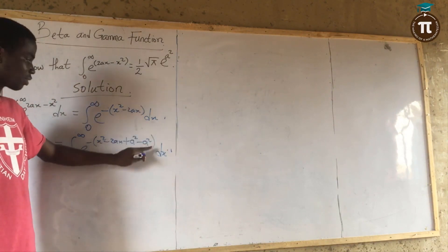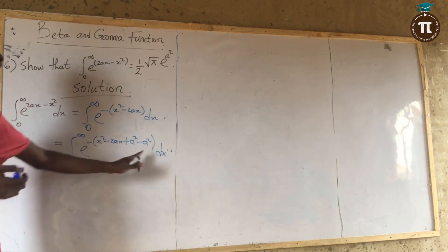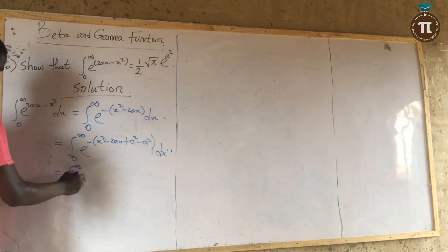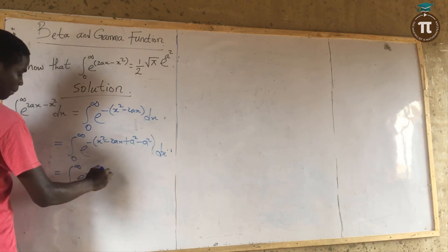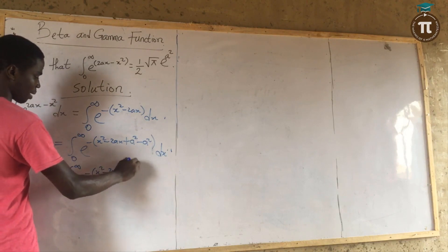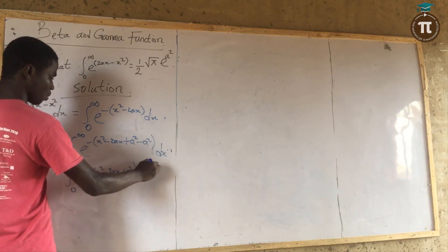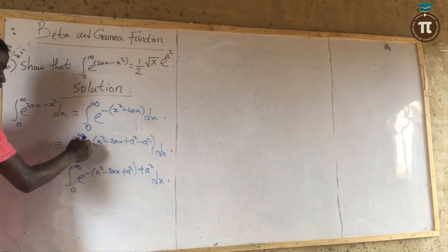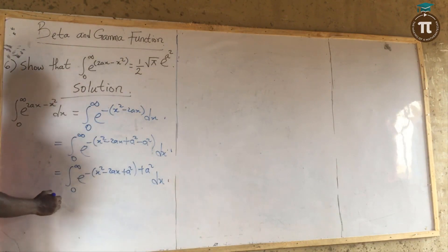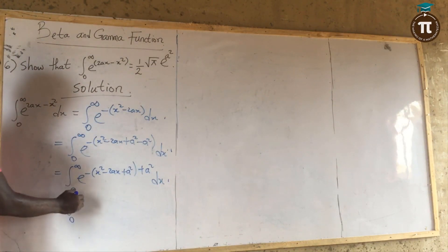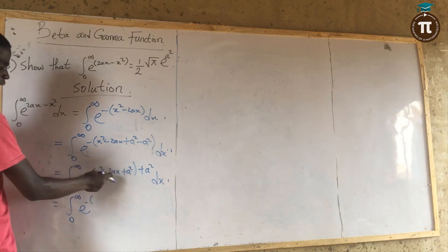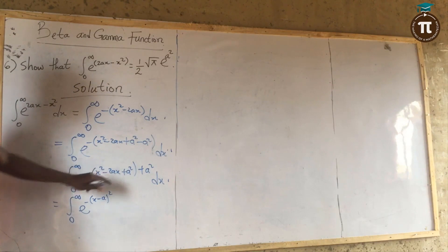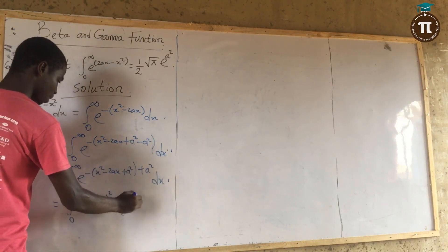I have added a squared and subtracted a squared. I will remove the minus a squared outside the bracket, so I have the integral from 0 to infinity of e raised to the power of minus (x squared minus 2ax plus a squared) dx. The expression x squared minus 2ax plus a squared is equal to (x minus a) all squared. Multiplying out, this also gives e raised to power a squared, from the laws of indices.